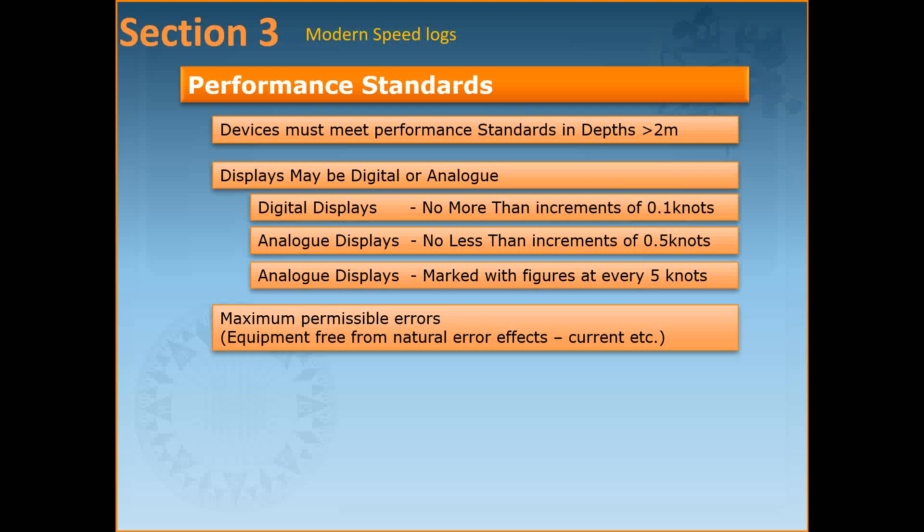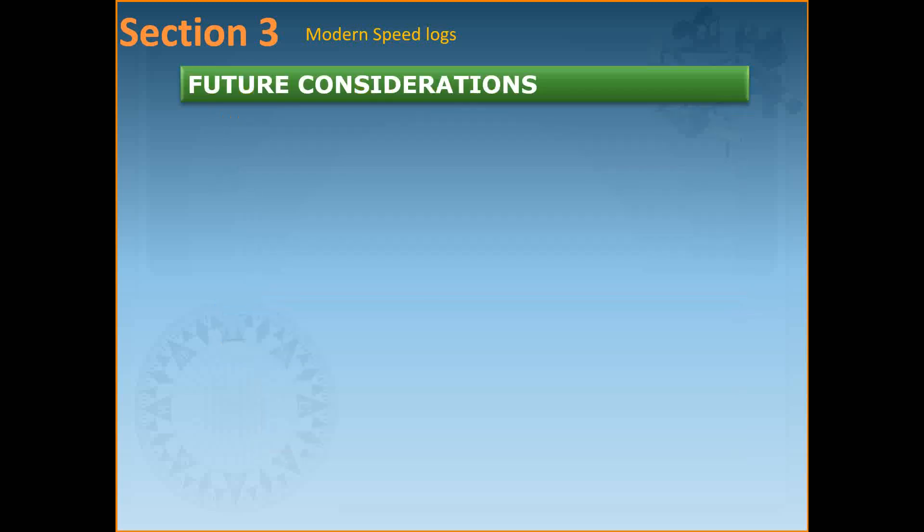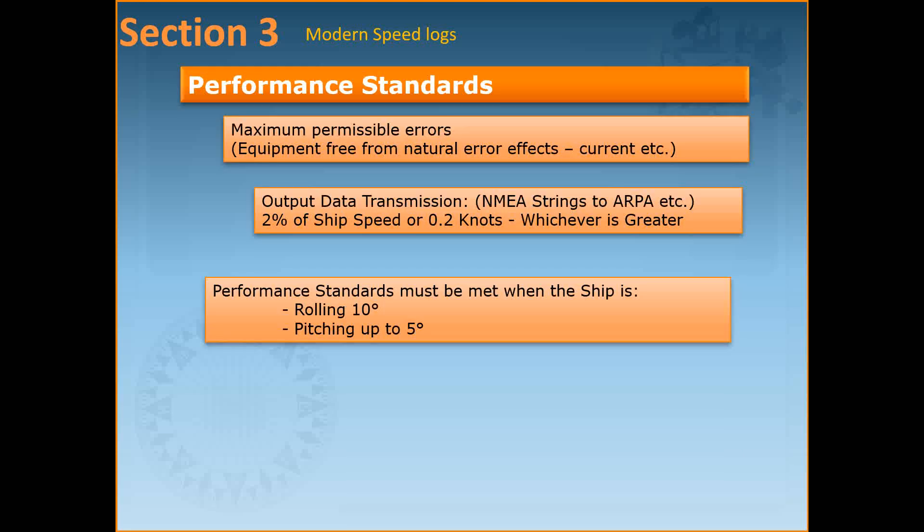Errors in the measured and indicated speed when the ship is operating free from shallow water effect and from the effects of wind, sea, bottom type, current and tide should not exceed the following: for a digital display 2% of the speed of the ship or 0.2 knots whichever is greater, for an analog display 2.5% of the speed of the ship or 0.25 knots whichever is greater, and for output data transmission 2% of the speed of the ship or 0.2 knots whichever is greater. Performance of the equipment should be such that it will meet the requirements of the standard when the ship is rolling up to ±10 degrees and pitching up to ±5 degrees.